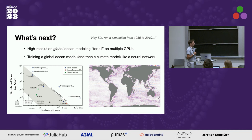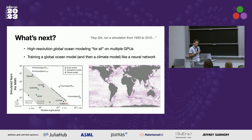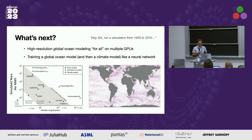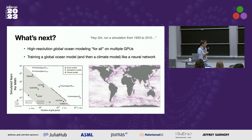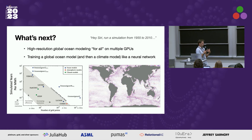Julia doesn't make the model intrinsically more performant — I think it makes it easier to develop a performant model. Given teams of the same size and the same resources devoted to the problem, that would be the case.